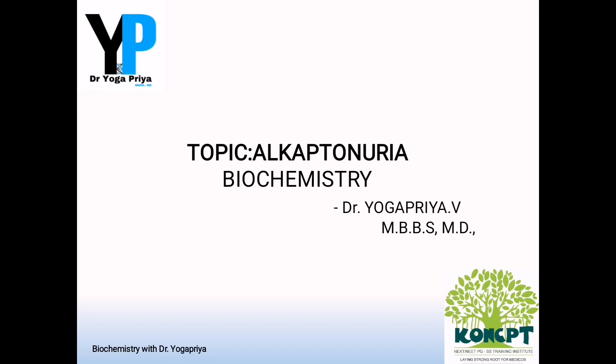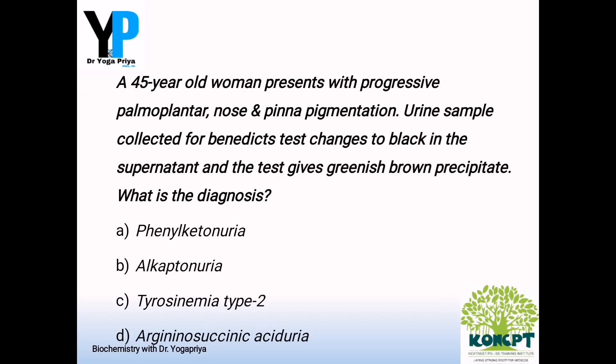So to start with, I am going to discuss a few clinical case scenarios. Today our topic of discussion is alkaptonuria. The given scenario is a 44-year-old woman presenting with progressive palmoplantar, nose and pinna pigmentation, and the urine sample collected from the patient for Benedict's test changes to black in the supernatant layer and the test gives a greenish brown precipitate.